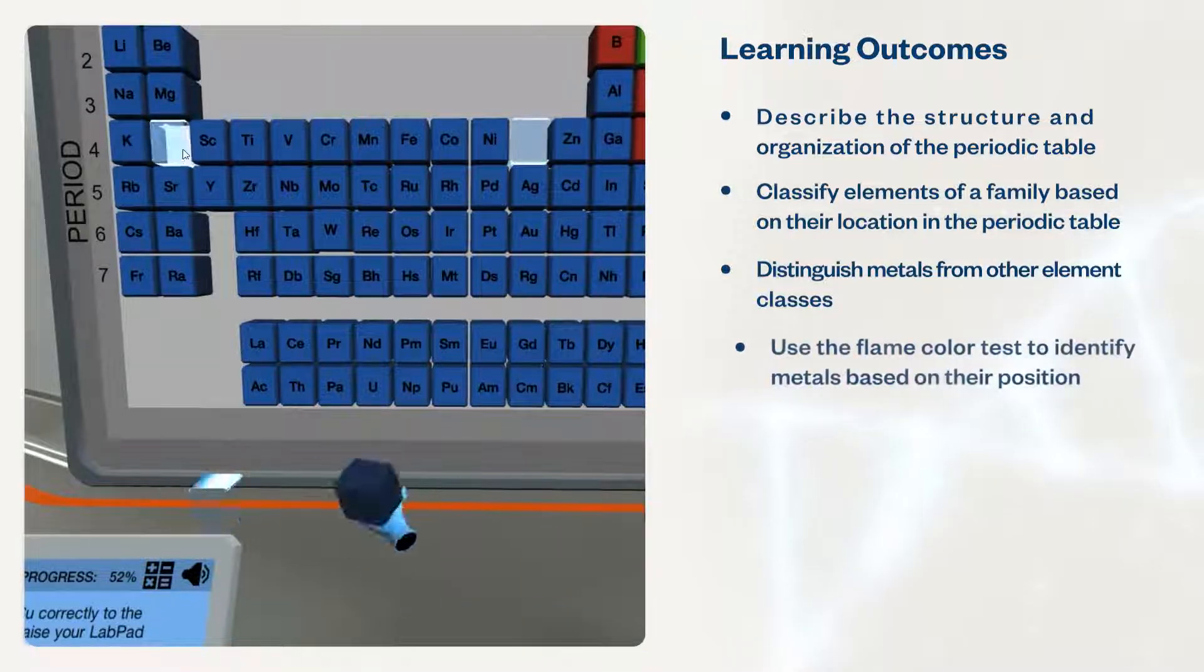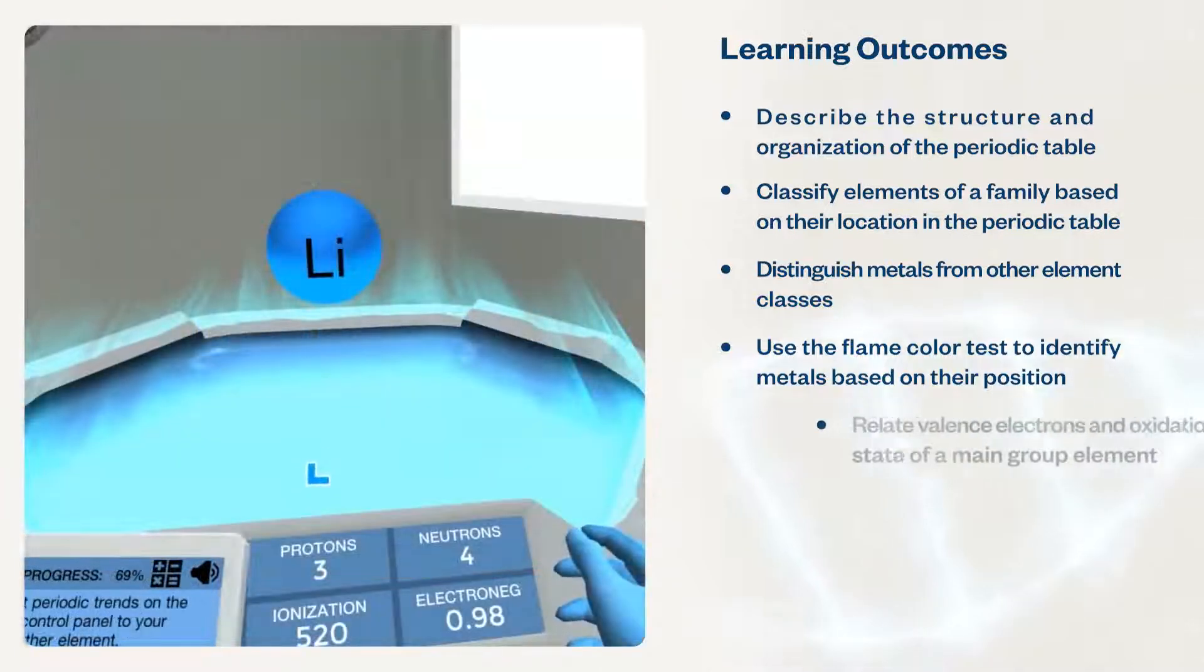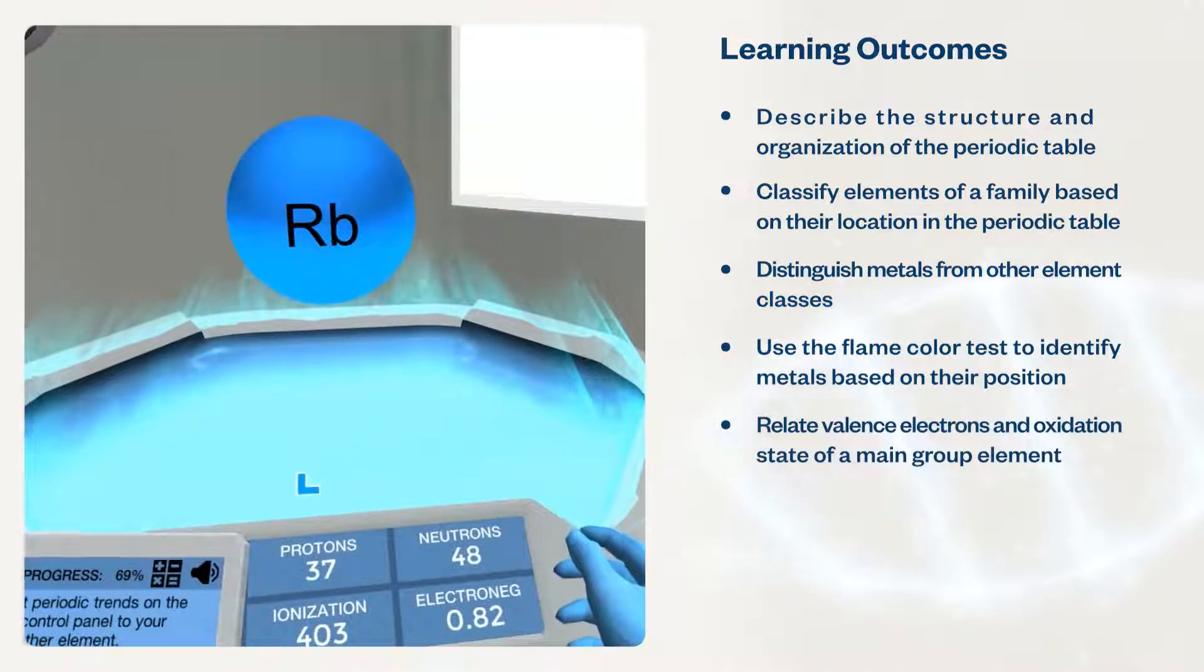Students will use the flame color test to identify metals based on their position in the periodic table and relate valence electrons and oxidation state of a main group element to its position in the periodic table.